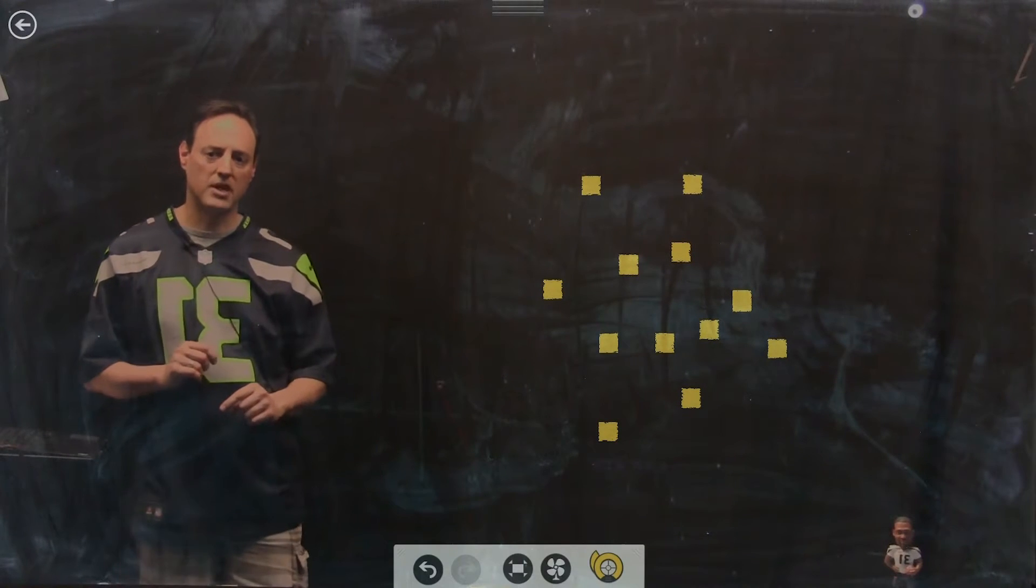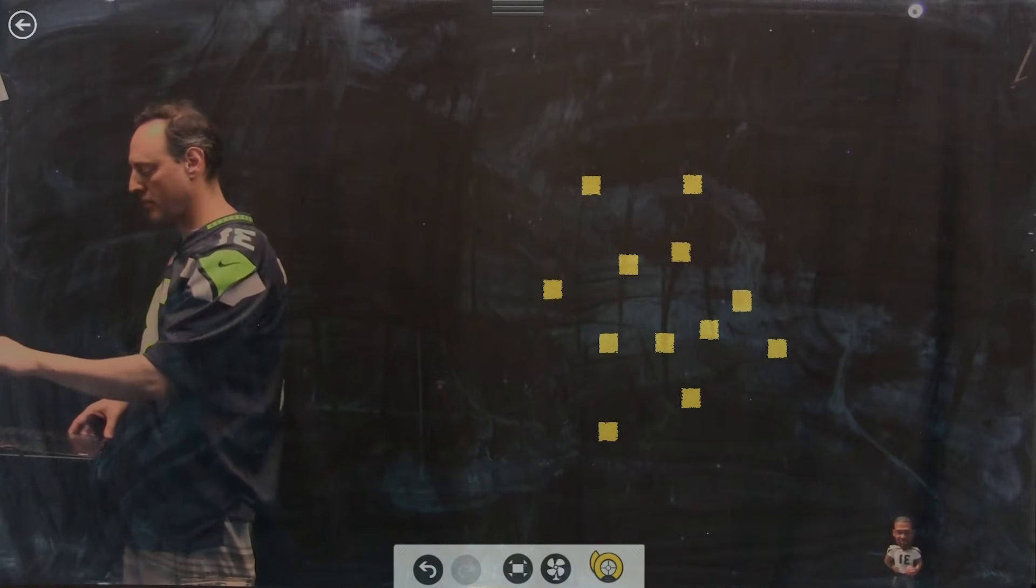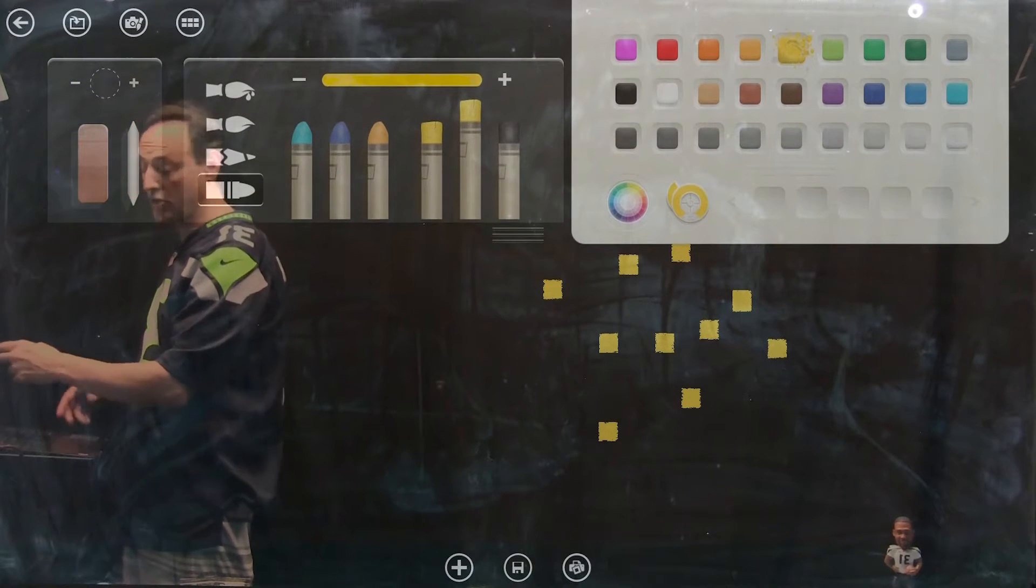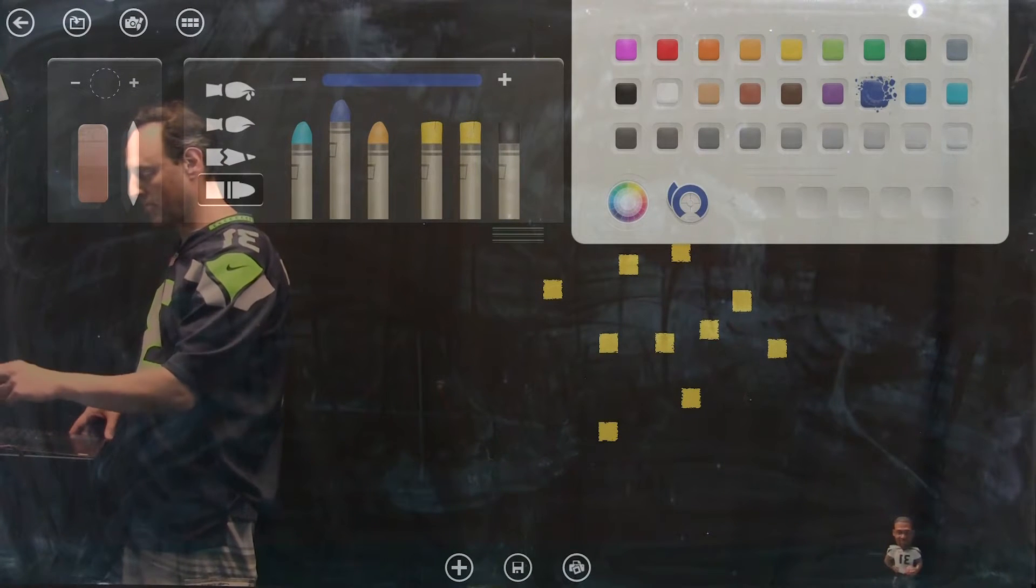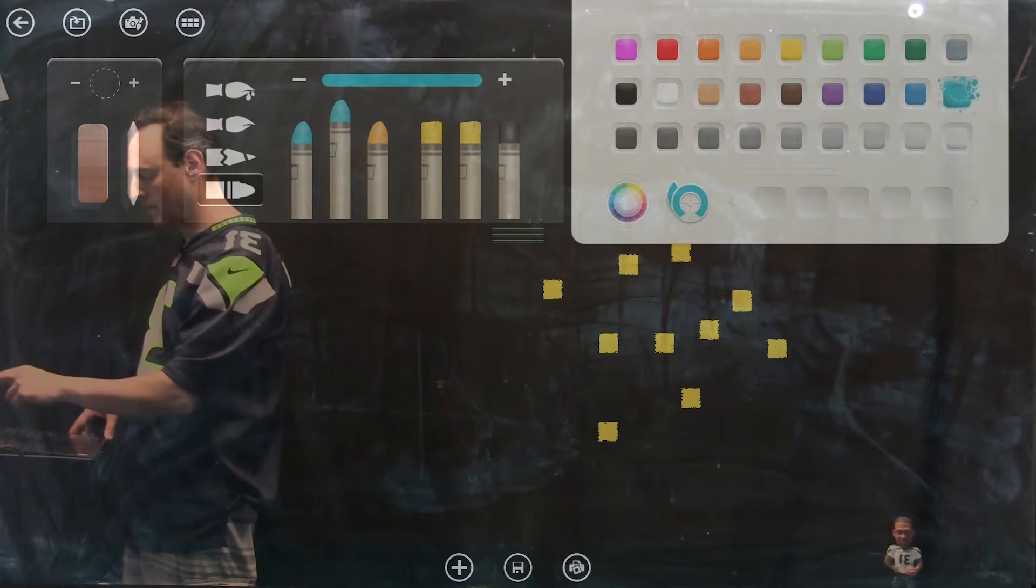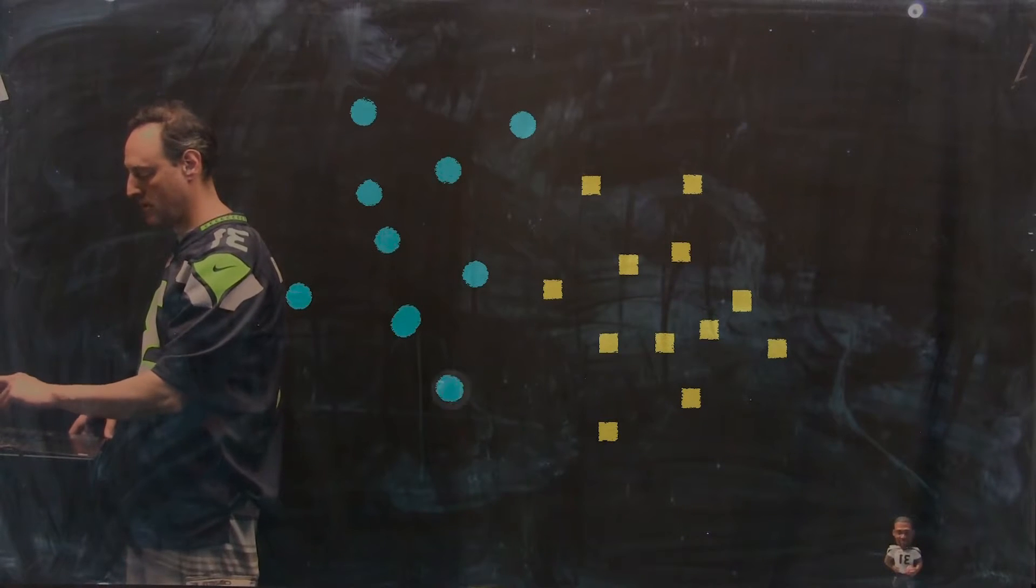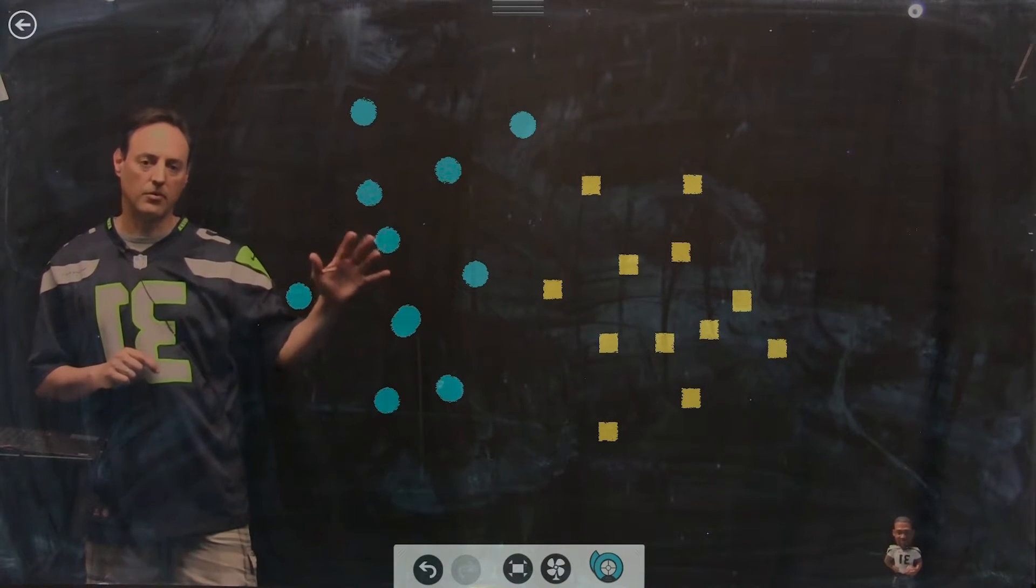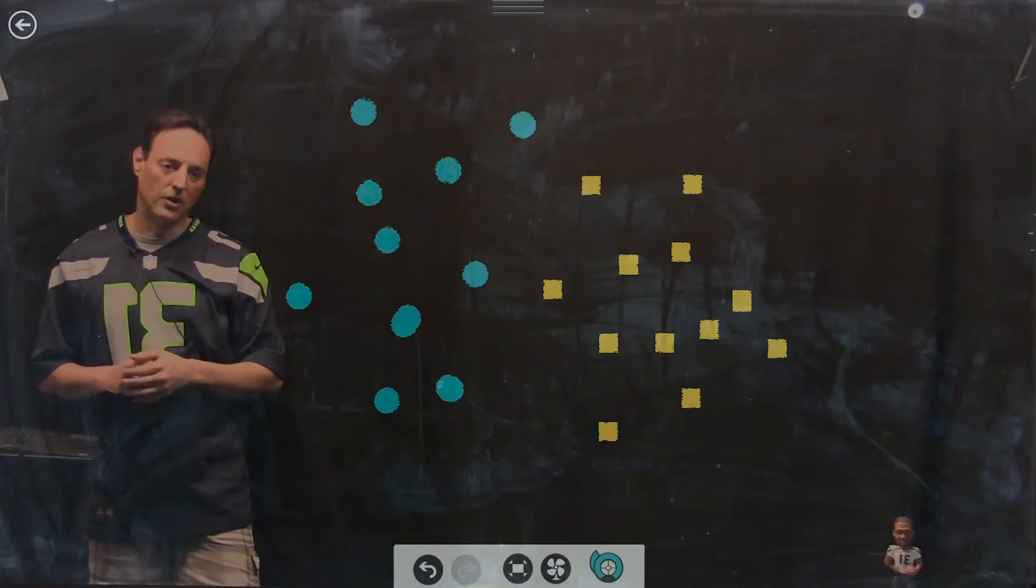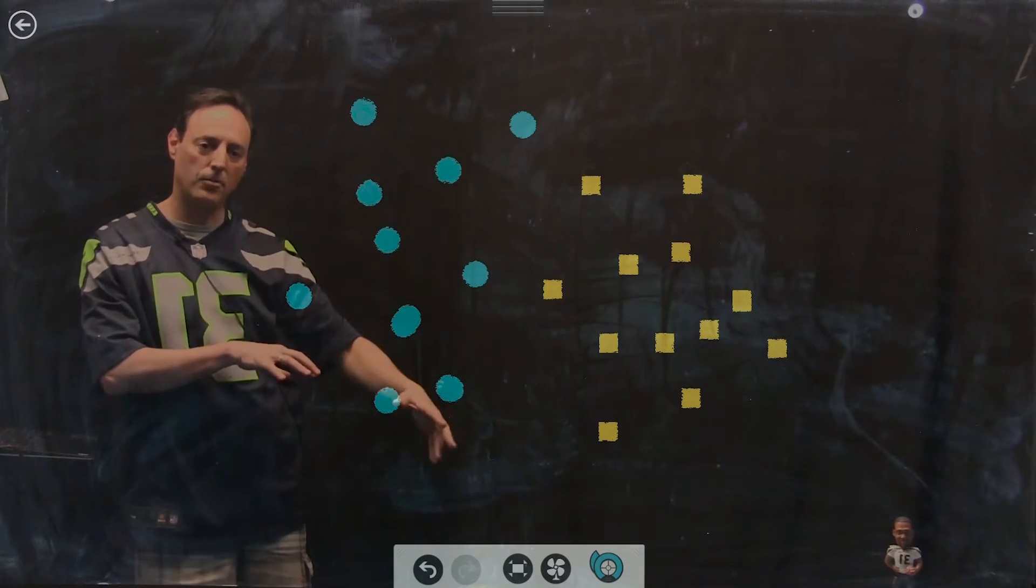And I'm going to put another set of data in, which could be another class, and you can do multiple classes just like anything else. Let's make it a light blue. Okay, so let's suppose that these are our two data sets. We have the blue, as well as these yellow squares, blue balls.